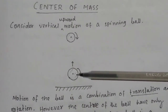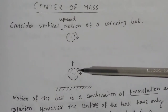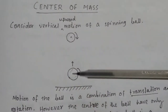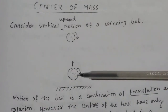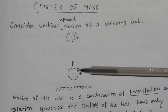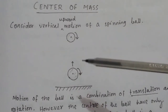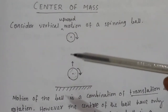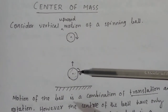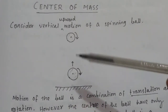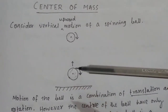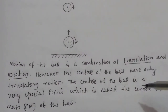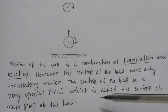In this motion, the center of the ball has only translatory motion. This is the center of the ball. The center of the ball has translatory motion only, but all the other points in the ball possess both translatory and rotatory motion. When both types of motion are present, it is very complicated to know the physics of this motion. But if we consider the center of mass, which is only in translatory motion and not in rotatory motion, then the motion of the ball will be simple. So the center of the ball is a very special point which is called the center of mass of the ball.